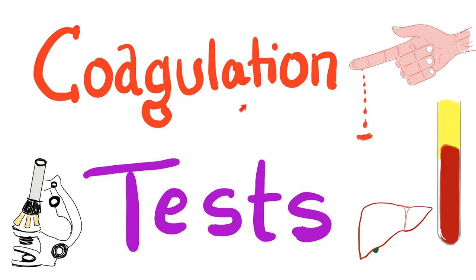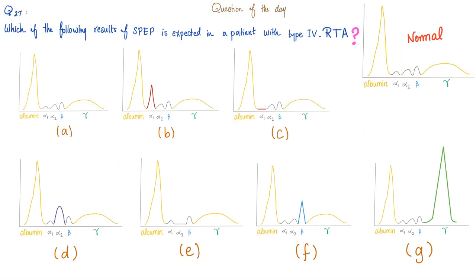In the previous video, we talked about the three different groups of coagulation factors: the fibrinogen group, the prothrombin group, and the contact group. Today we'll talk about coagulation tests: the PT, the PTT, the TT, the DRVVT, serum fibrinogen level, and others. First, let me answer the question from the previous video: which of the following results of serum protein electrophoresis is expected in a patient with type 4 RTA — renal tubular acidosis?